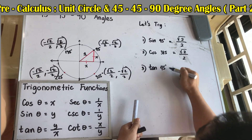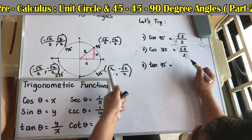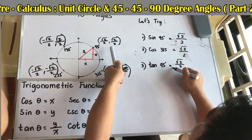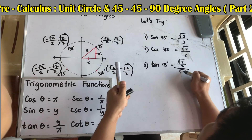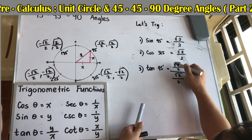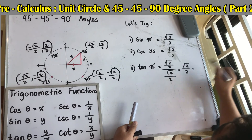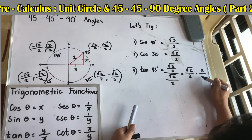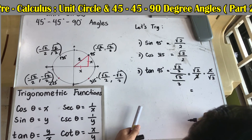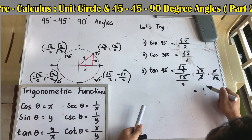Number three: tangent 45°. Tangent equals y over x. At 45°, both x and y equal √2/2. So tangent 45° = (√2/2) ÷ (√2/2). Multiplying the numerator by the reciprocal of the denominator: (√2/2) × (2/√2). The √2 and 2 cancel out, giving tangent 45° = 1.